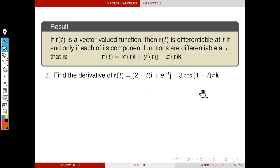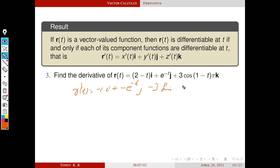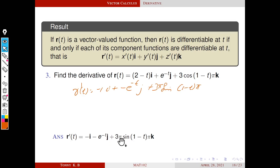For example, find the derivative of r(t) = (2 − t)i + e^(−t)j + 3cos(1 − t)πk. Differentiating with respect to t: the derivative of (2 − t) is −1, giving −i. The derivative of e^(−t) is −e^(−t)j. The derivative of cos is −sin, so we get −sin(1 − t)π, and differentiating (1 − t)π gives −π, making the last term +3π sin(1 − t)π k. So r'(t) = −i − e^(−t)j + 3π sin(1 − t)π k.